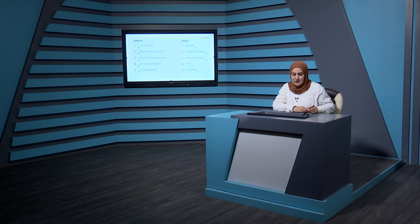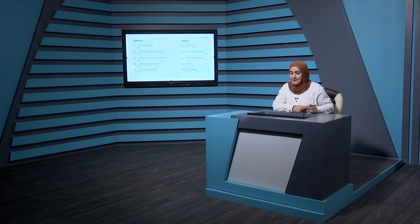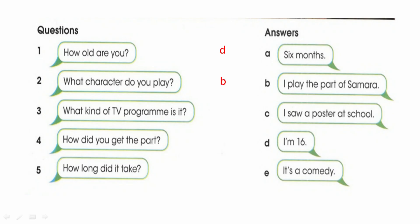Matching the answers: 1. 'How old are you?' — answer D: 'I am 16.' 2. 'What character do you play?' — answer B: 'I play the part of Samara.' 3. 'What kind of TV program is it?' — answer C: 'It's a comedy.' 4. 'How did you get the part?' — answer E: 'I saw a poster at school.' 5. 'How long did it take?' — answer A: 'Six months.'